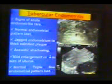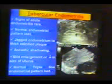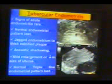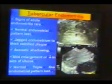Coming to the tubercular endometritis, this is a normal endometrium which looks like a triple-layered endometrium. You always try to keep an image of the normal endometrium and keep comparing when you see it. When you do a routine sonography, the signs of acute endometritis are very rare compared to the normal endometrium pattern.